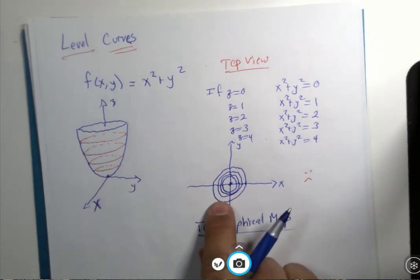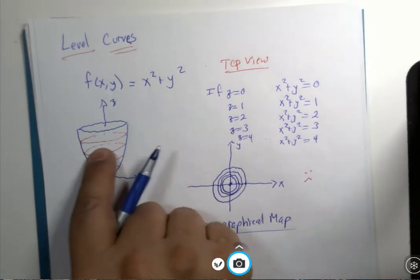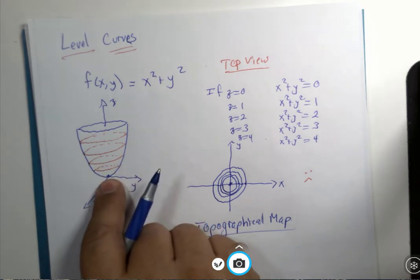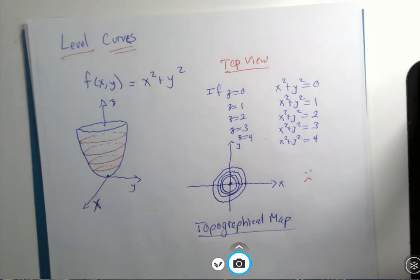And these curves represent everything, like this last curve, everything is at the fourth level. Third level, second level, first level, ground level. So that's the concept of a level curve.